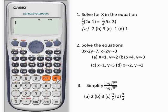Let me start with question number one. It says, solve for x in the equation 2/3(2x-1) = 1/4(5x-3).